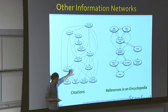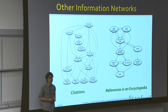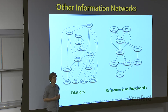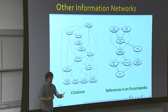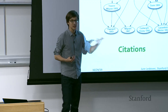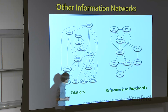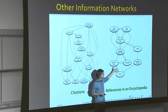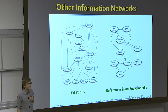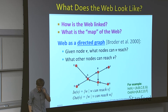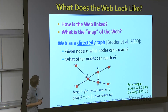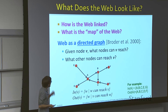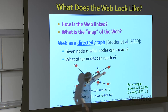Other examples of information networks include citations between papers, where every node is a paper. Since you can only cite papers that existed before yours, this graph should have no loops — it's a directed acyclic graph. References in encyclopedias are another example of an information network showing how concepts relate to each other.